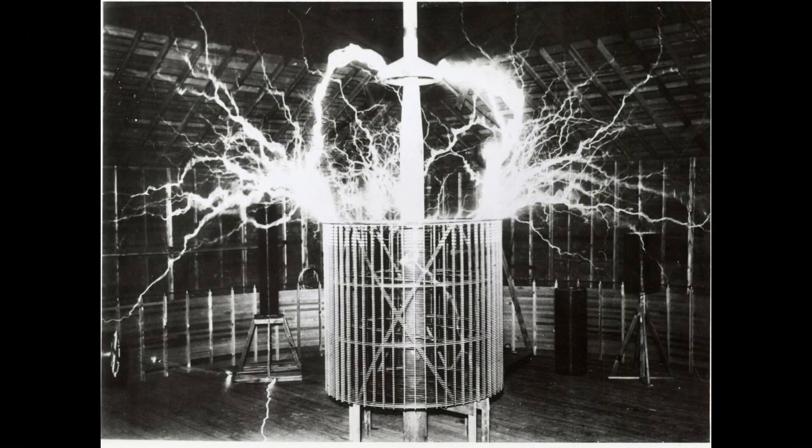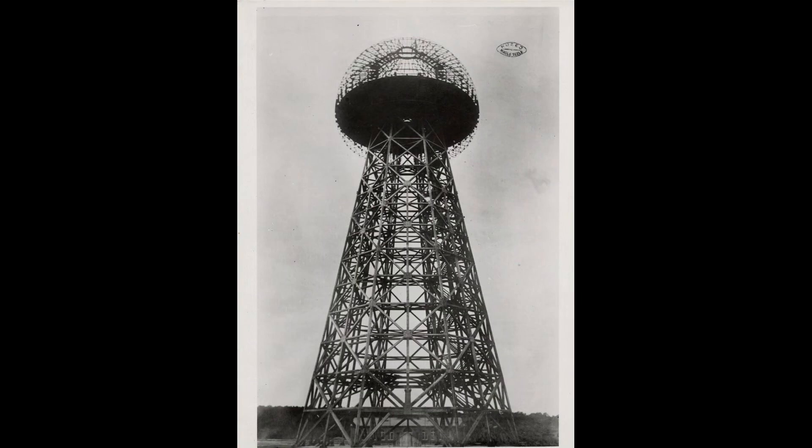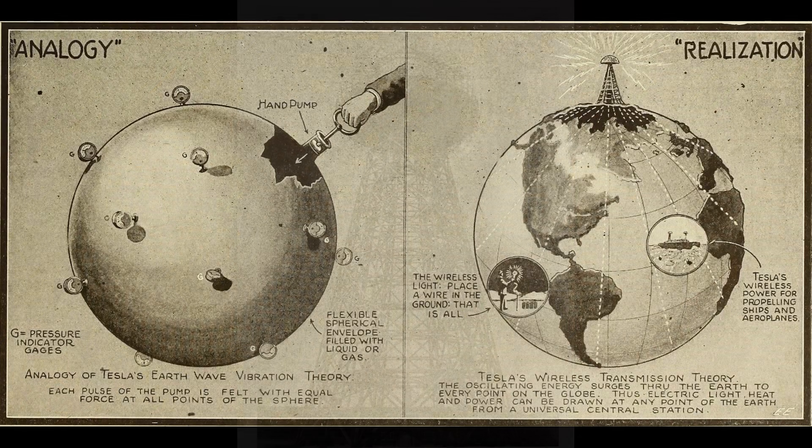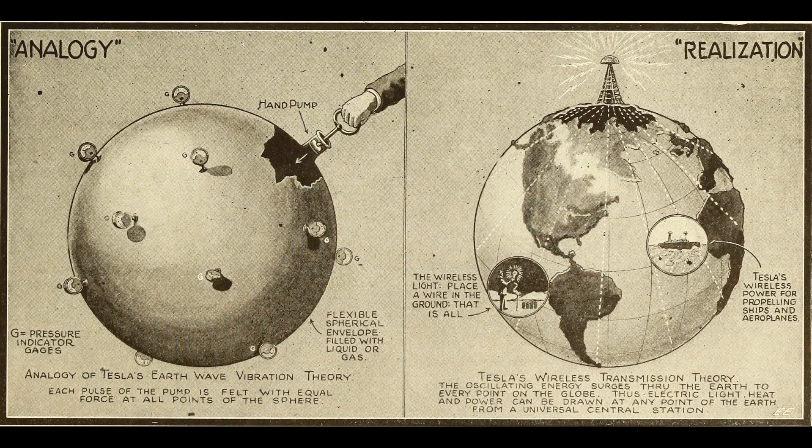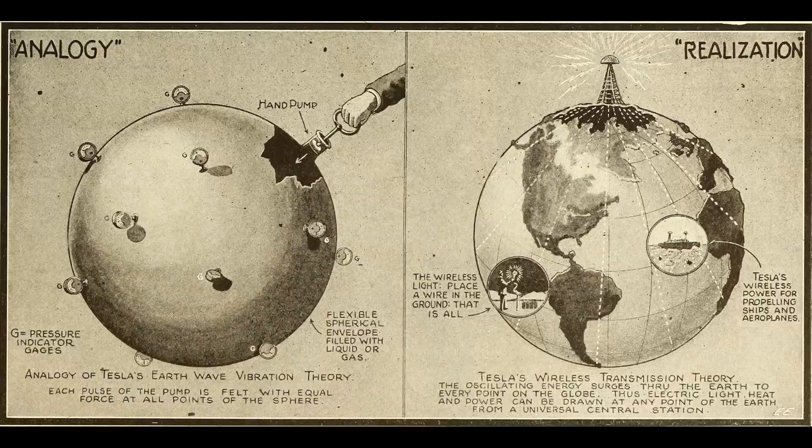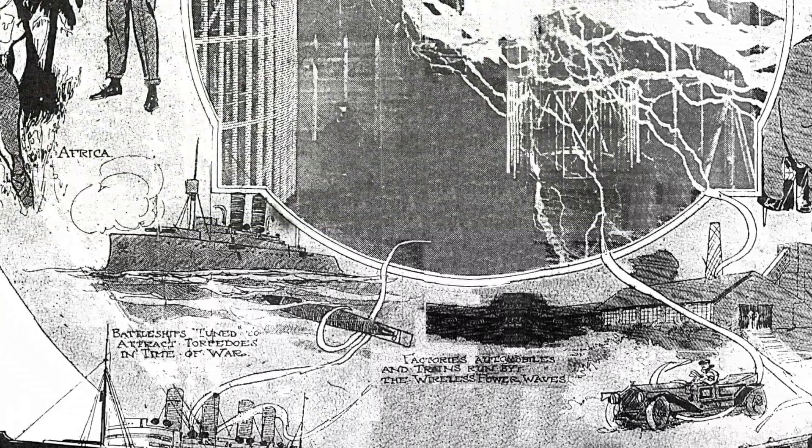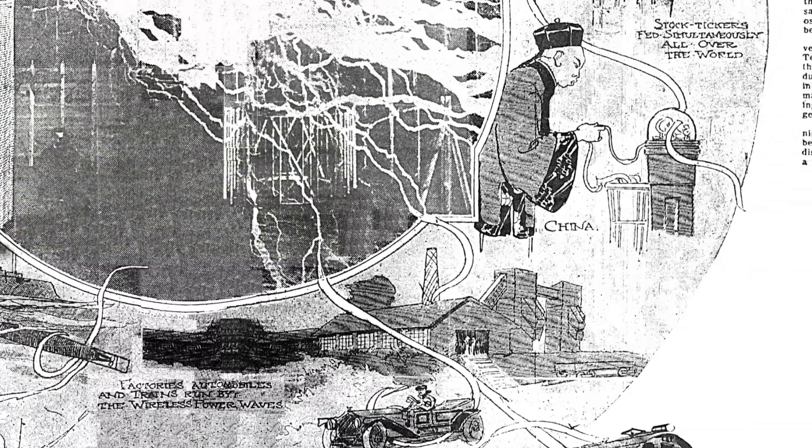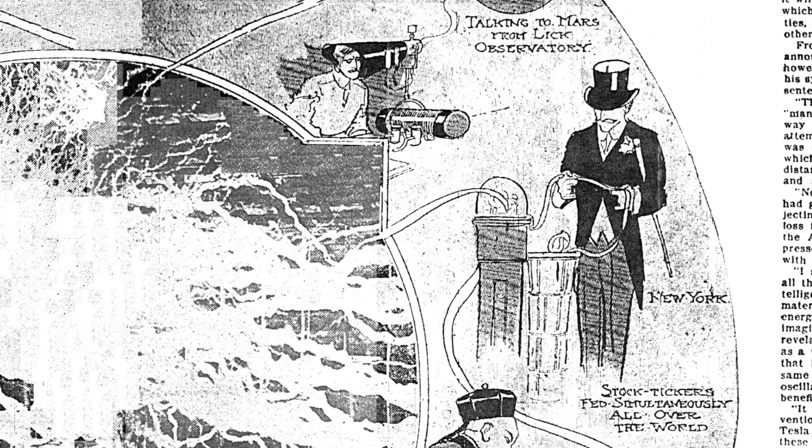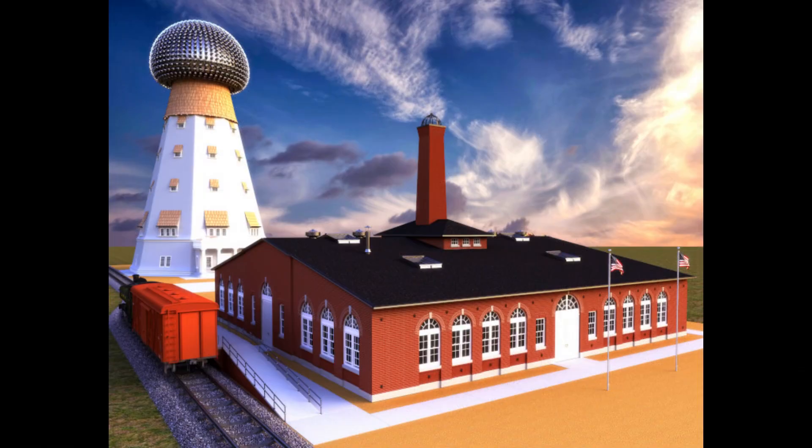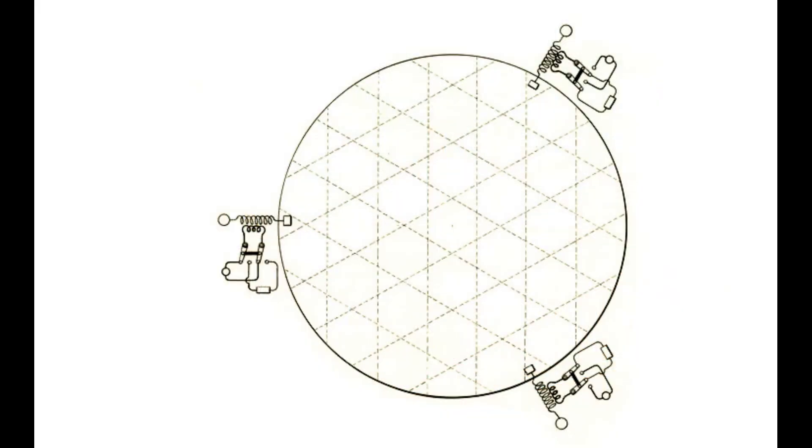Tesla developed a system that would make all of this possible. His system, consisting of large towers, would pump as much electric charge as possible in and out of the Earth, creating standing waves in the Earth. These waves can be tapped anywhere to provide energy, and they can be modulated to carry messages. The first of these towers was built at Wardenclyffe, New York. With three or more such towers at appropriate locations around the world, these waves can be used to triangulate one's position, thus giving us a global positioning system.